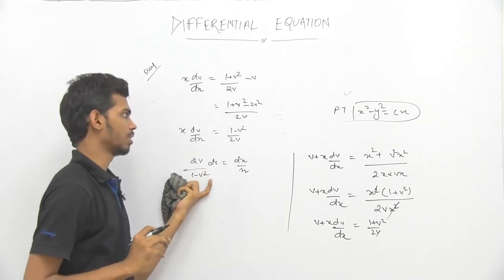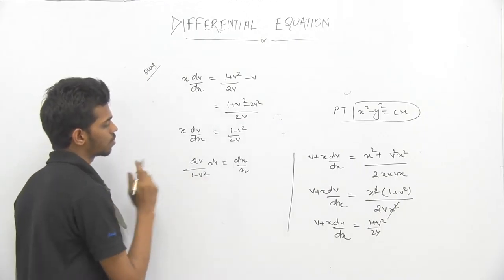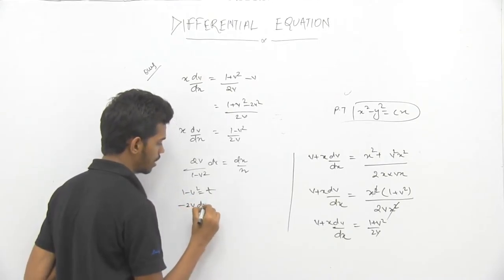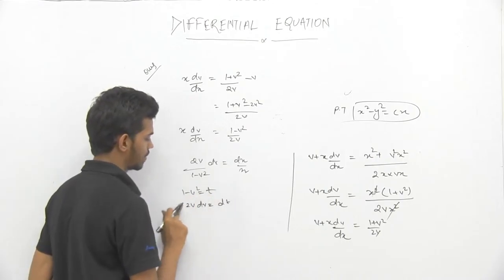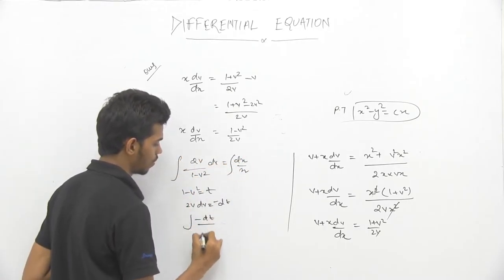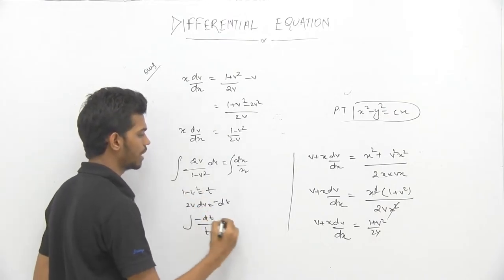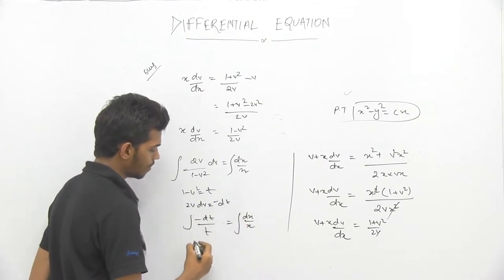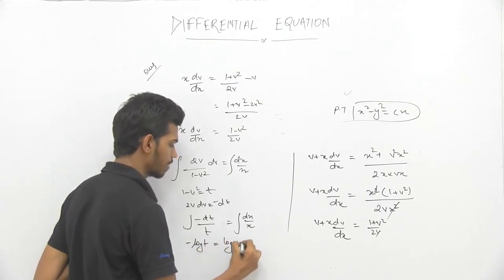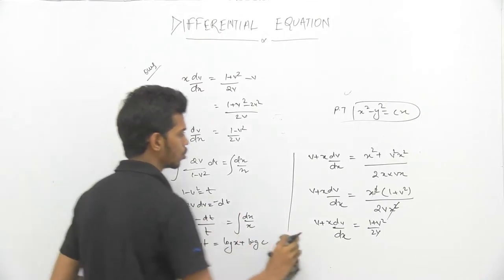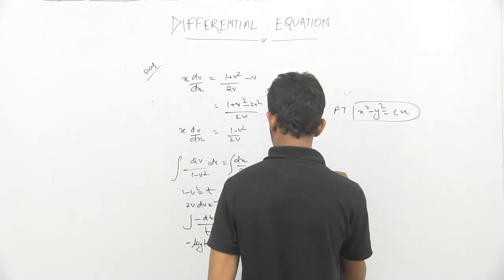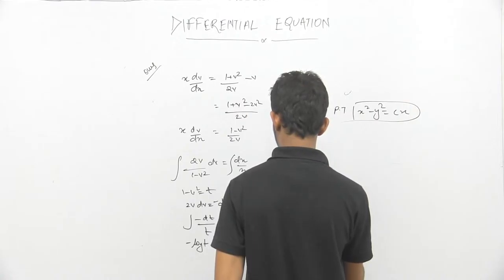Now we have 1 - v² = t, so differentiating, -2v dv = dt, meaning 2v dv = -dt. Integrating both sides, we get -dt/t = dx/x, so -log t = log x + log c.